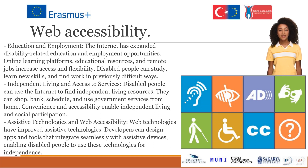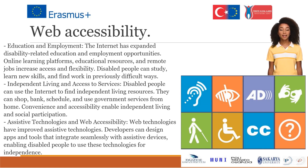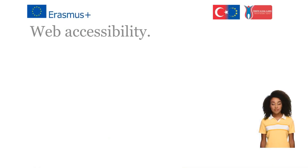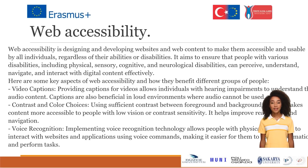Independent living and access to services: disabled people can use the internet to find independent living resources. They can shop, bank, schedule, and use government services from home. Convenience and accessibility enable independent living and social participation. Assistive technologies and web accessibility: web technologies have improved assistive technologies, and developers can design apps and tools that integrate seamlessly with assistive devices. Web accessibility aims to ensure that people with various disabilities — including physical, sensory, cognitive, and neurological — can perceive, understand, navigate, and interact with digital content effectively.